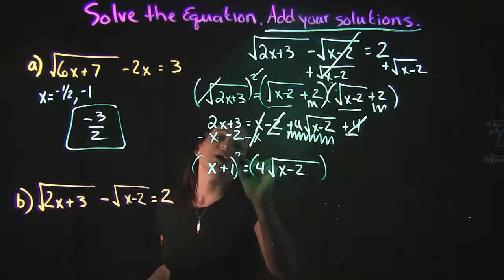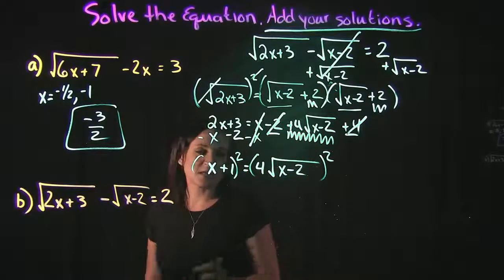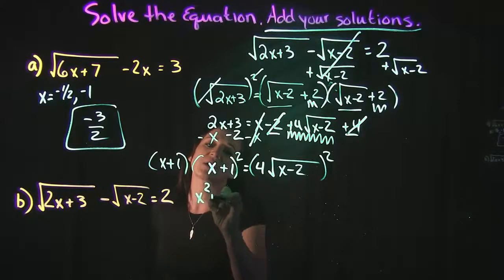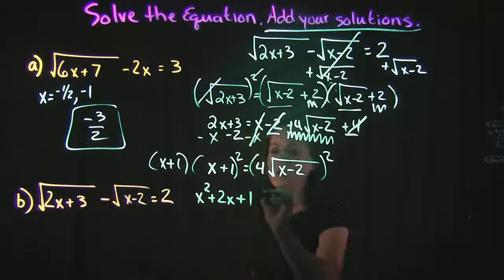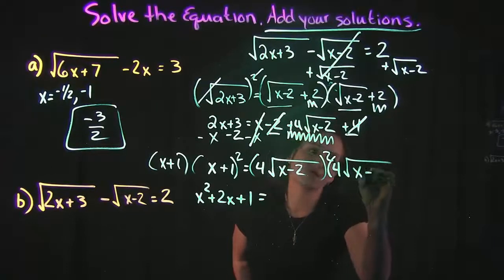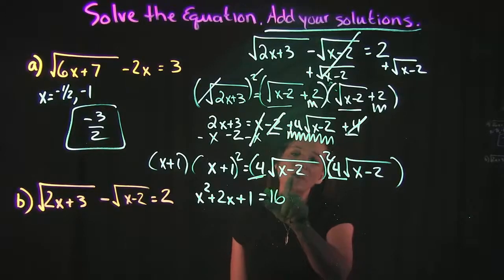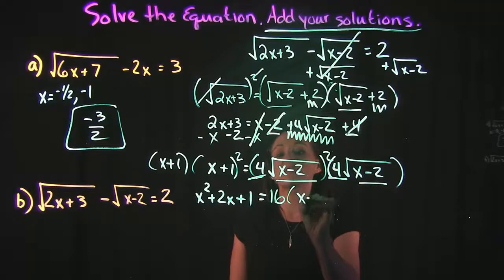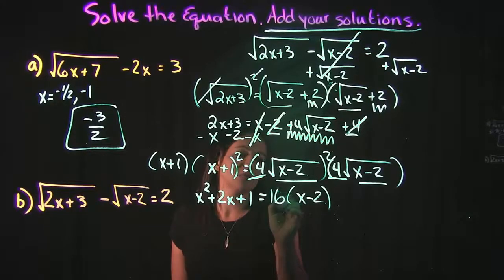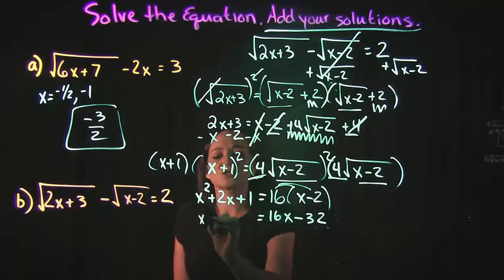Because there's still a radical, I need to square both sides again. Squaring the left side: (x + 1)² equals x² plus 2x plus 1. On the right, (4√(x−2))² equals 16 times (x minus 2). Distributing the 16 gives 16x minus 32.